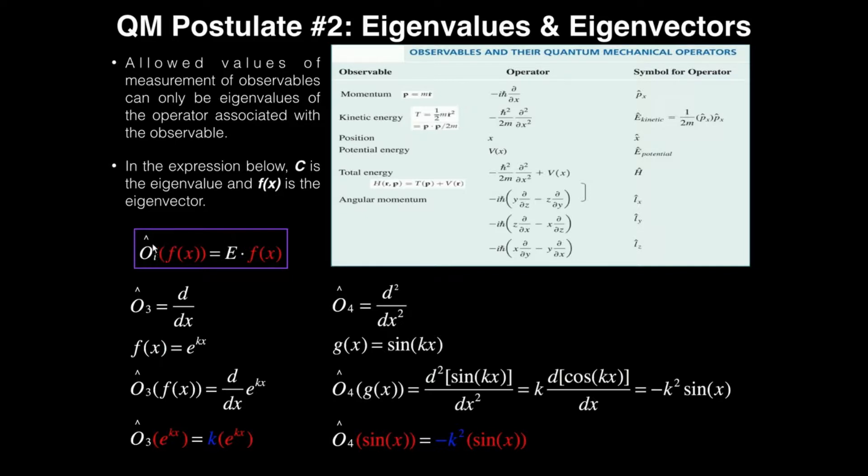It turns out that the only allowed values for the measurement of that observable, so whatever observable is represented by this operator, that value is E right here. So if, for example, if this was the momentum operator, and I was operating that on the wave function, this value of E would be a possible value of the momentum. If this was the position operator, which in this case is X, and I operated on the wave function, then this E is the possible value of position, and so on and so forth. But this E has another stipulation that's very important. It has to be what's called an eigenvalue of the operator.